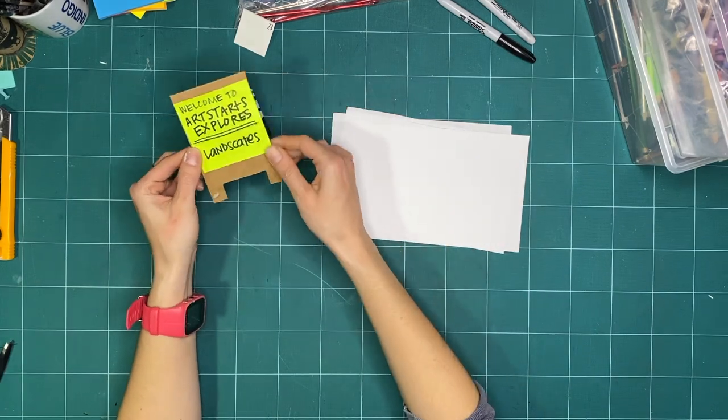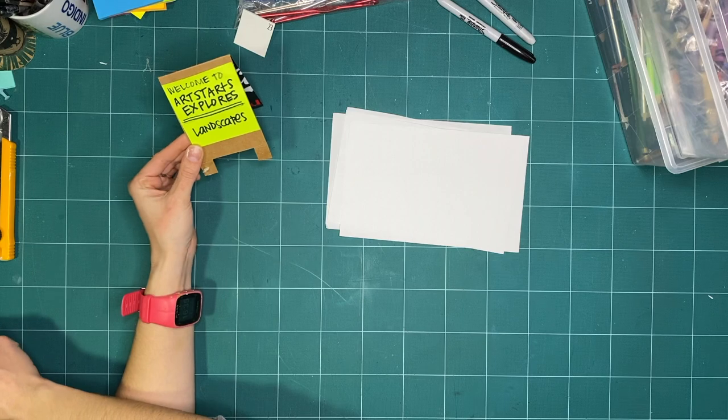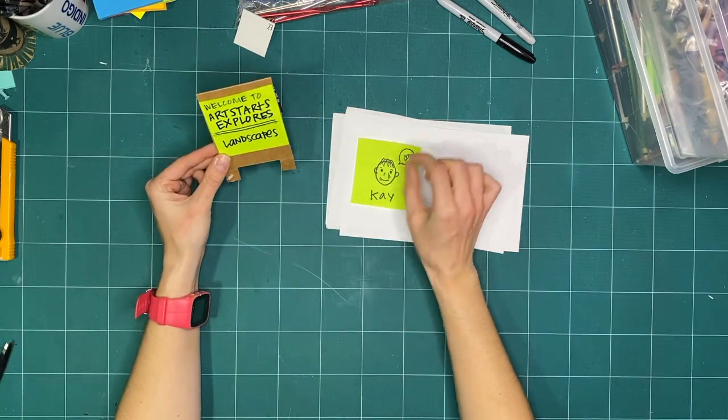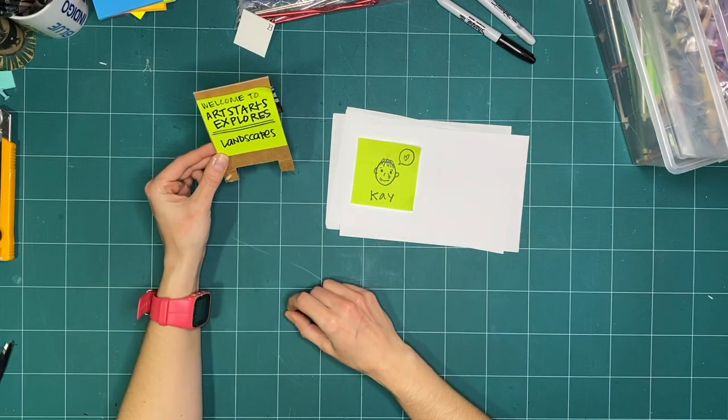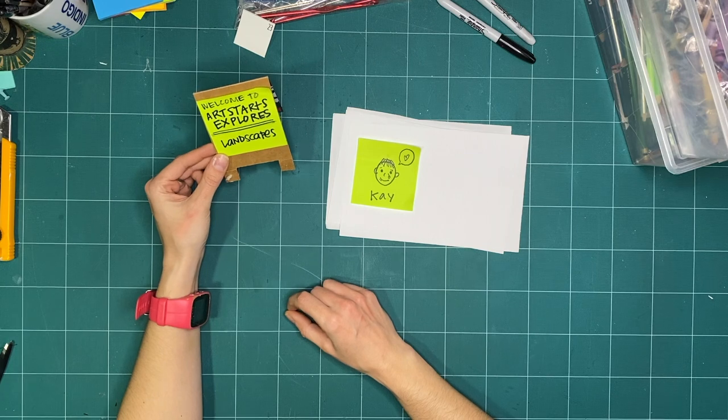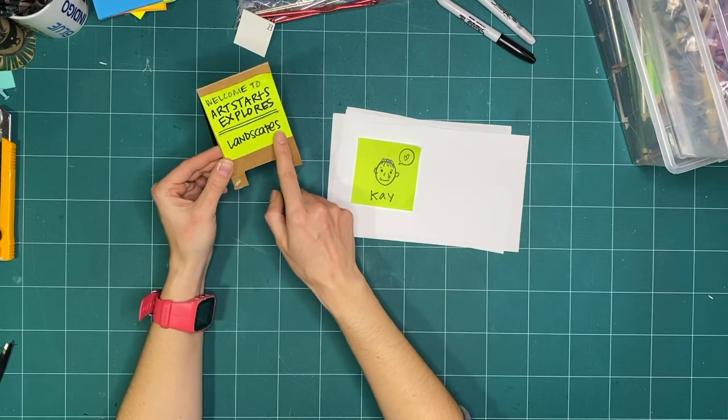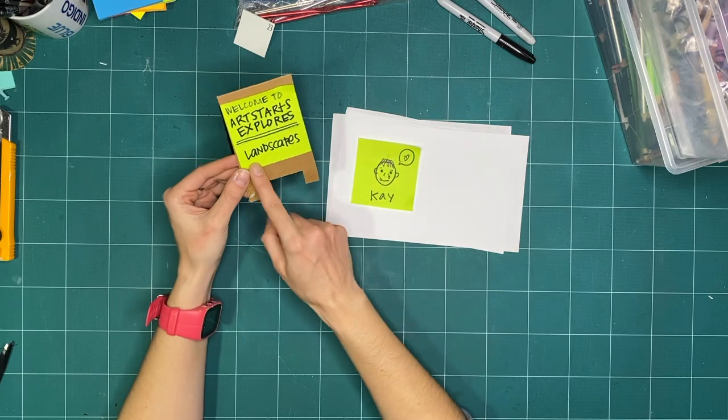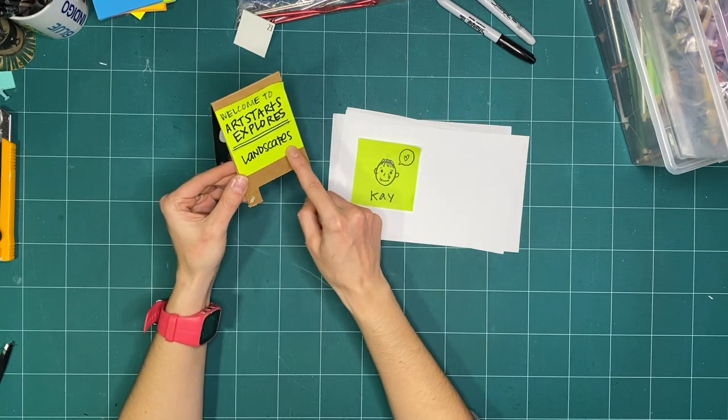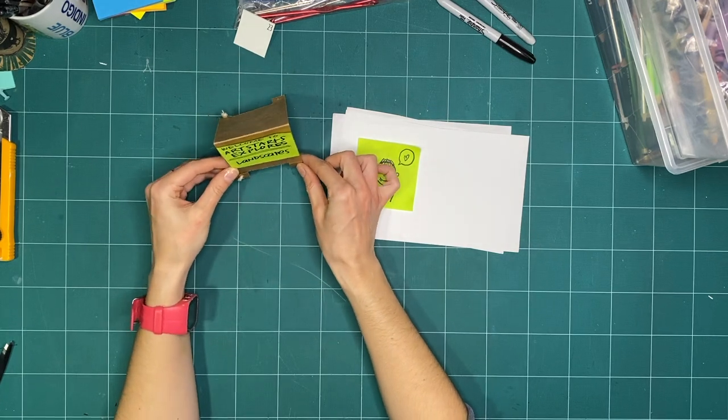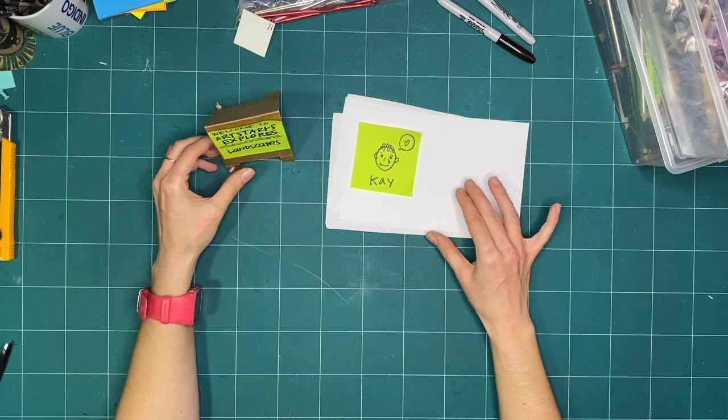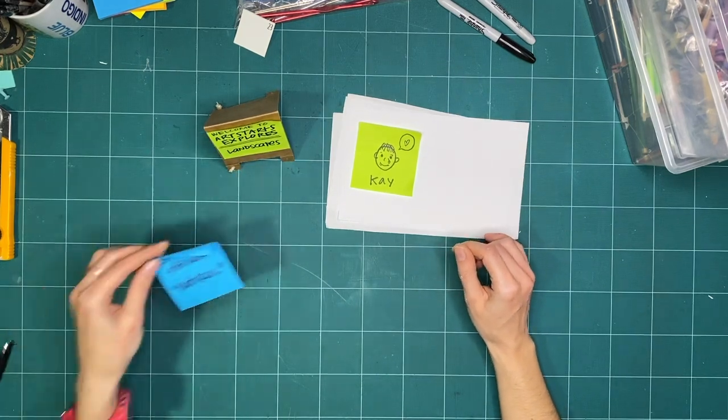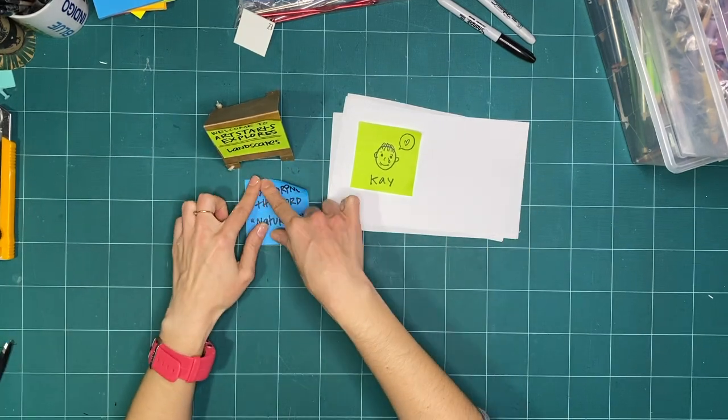Hello everyone and welcome to Artstarts Explorers. My name is Kay Slater and I am the gallery program facilitator and preparator at Artstarts and Schools. This month we're going to be exploring landscapes, and today I thought we could look at the word natural.